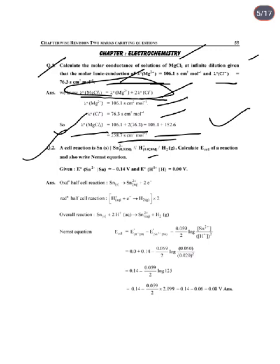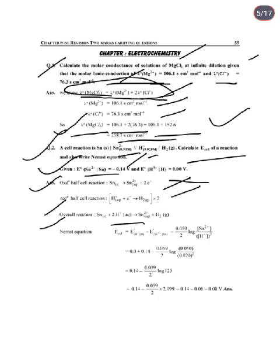Next question: Cell reaction is Sn | Sn²⁺ (0.15 M) || H⁺ (0.020 M) | H₂. Calculate the EMF of the cell. Given: E°(Sn²⁺/Sn) = −0.14 V, E°(H⁺/H₂) = 0.00 V. Oxidation half-reaction: Sn → Sn²⁺ + 2e⁻. Reduction half-reaction: 2H⁺ + 2e⁻ → H₂. E_cell = E°_cell − (0.059/2) × log([Sn²⁺]/[H⁺]²). Substituting values gives the answer.